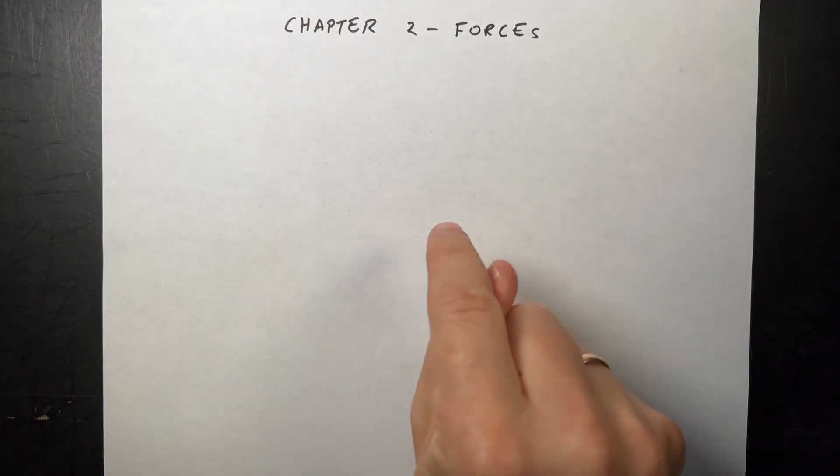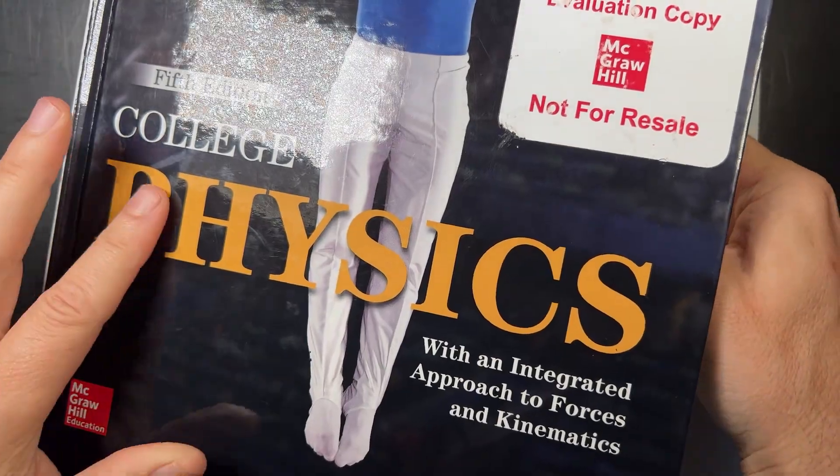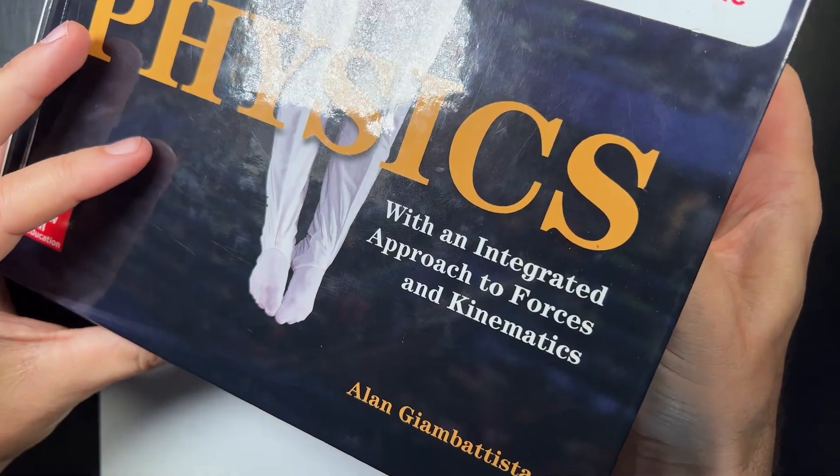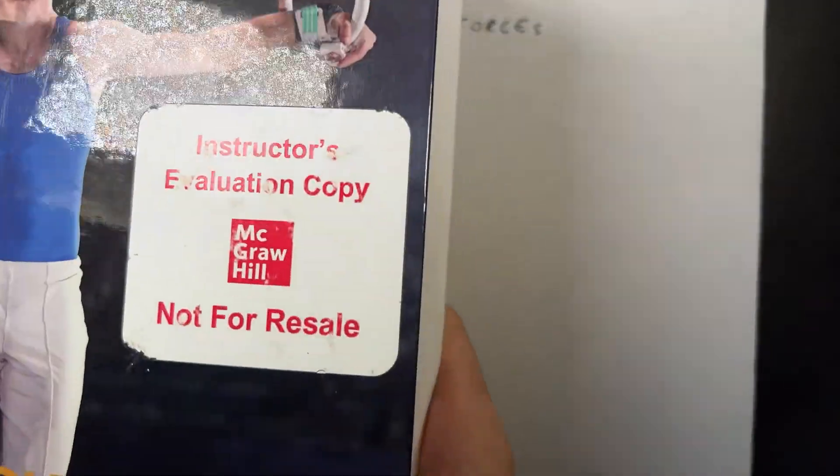I'm going to start chapter summaries. This is the chapter summary for chapter two, Forces. And just so you know, I am using this textbook, the fifth edition, College Physics by John Batista.